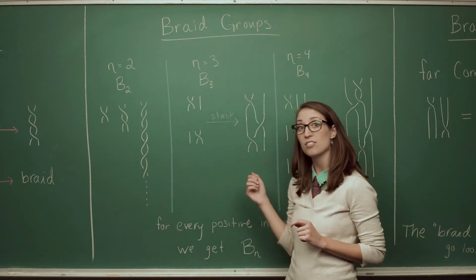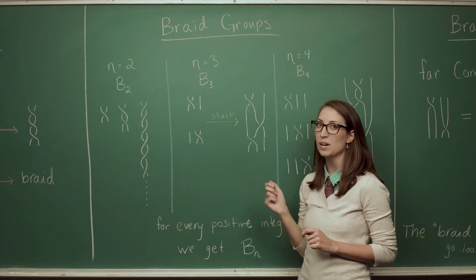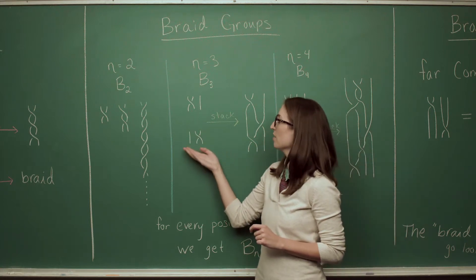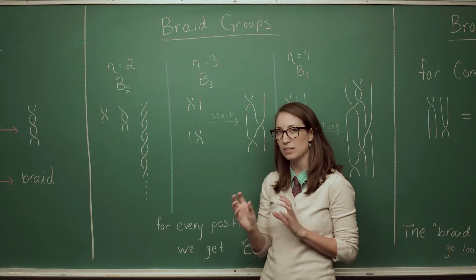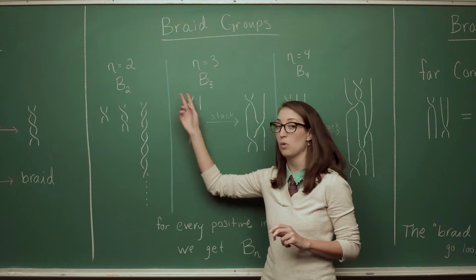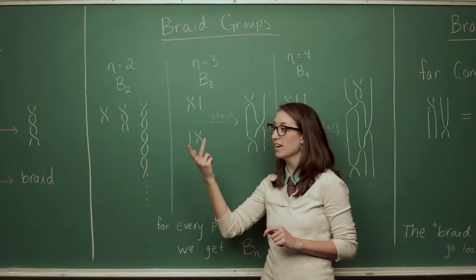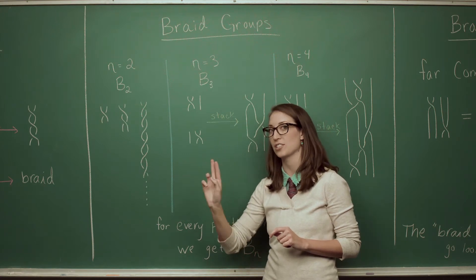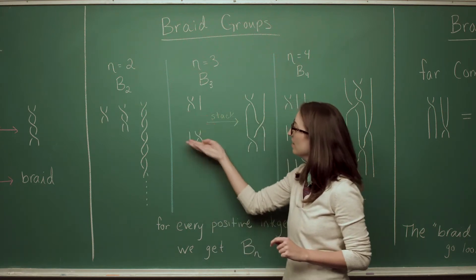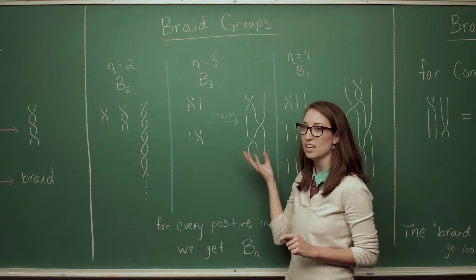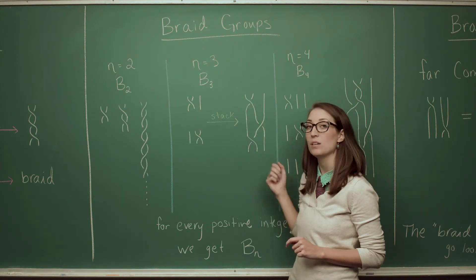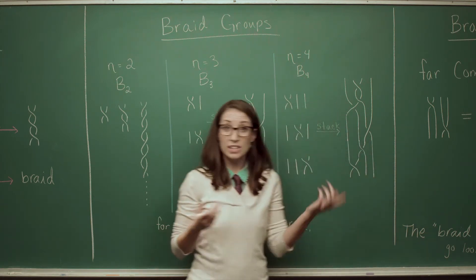But if I add a third strand I can now get some more complicated braids to happen. And the reason for that is there's sort of two fundamental little braids. I can swap the first two strands or I can swap the second two strands. And again I can always swap in the opposite direction. Now if I stack little pieces of that form together I can get lots of complicated braids with three strands. But we can keep going.